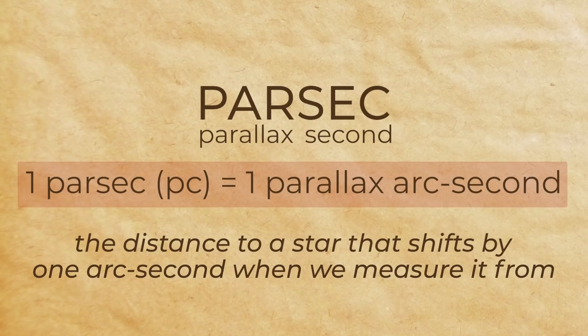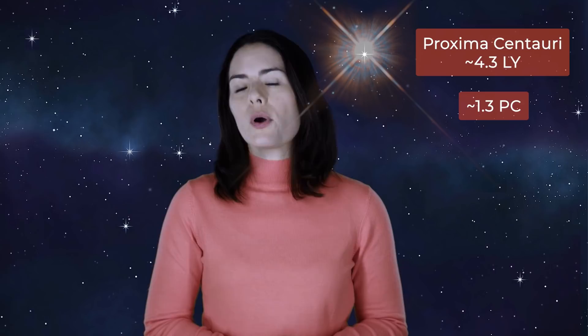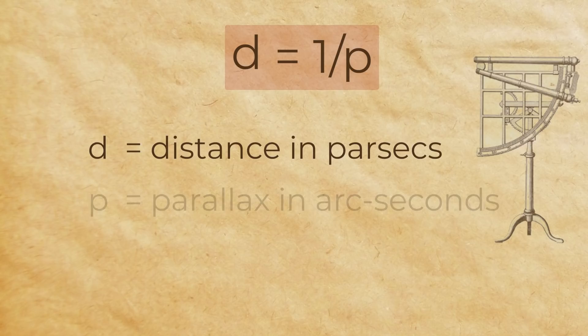Now let's put those two ideas together. A parsec is the distance to a star that shifts by one arc second when we measure it from one side of Earth's orbit versus the other side. Actually, there aren't any stars that are that close to us. Our closest neighbor is Proxima Centauri, which we said earlier was 4.3 light years away, or about 1.3 parsecs. Its parallax is about 0.77 arc seconds. The general equation here is d equals 1 over p, where d is the distance to the star in parsecs, and p is the parallax, measured in arc seconds.